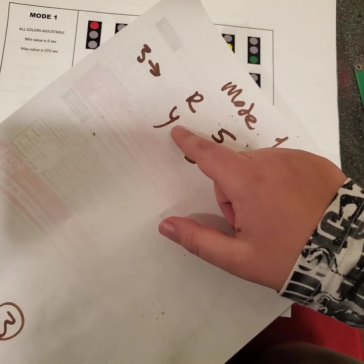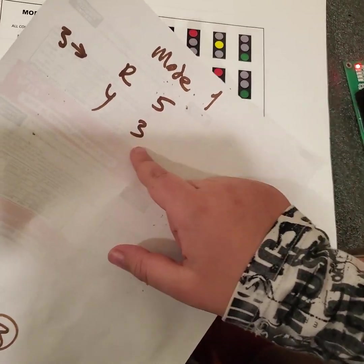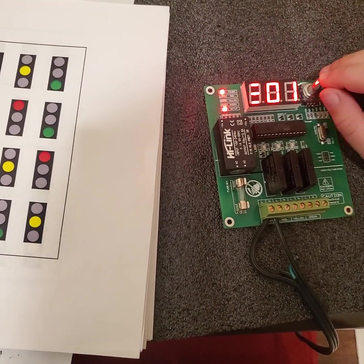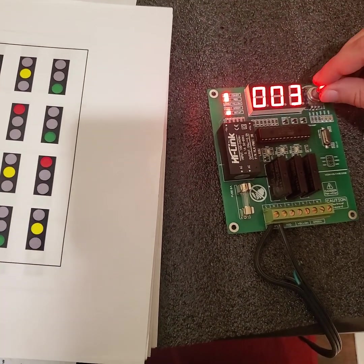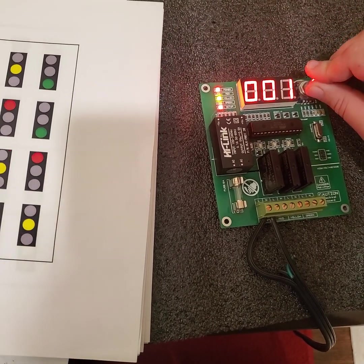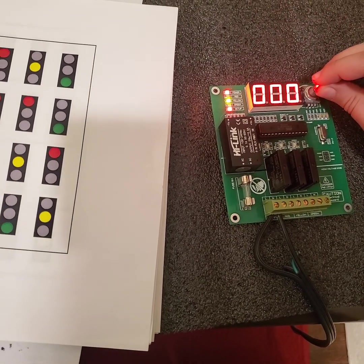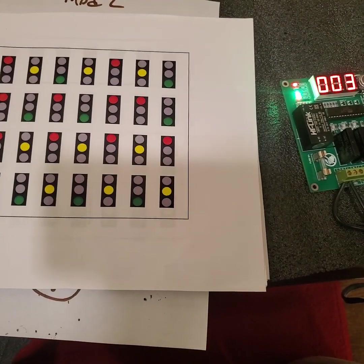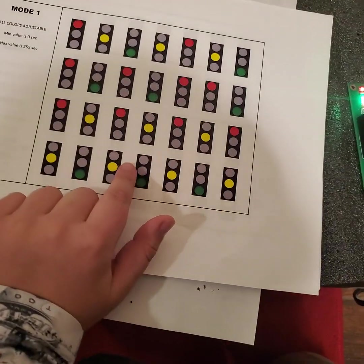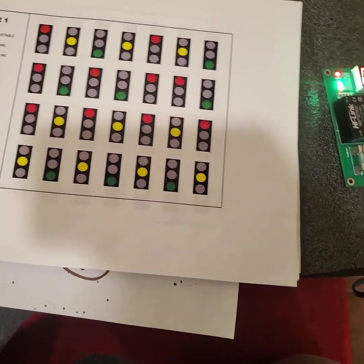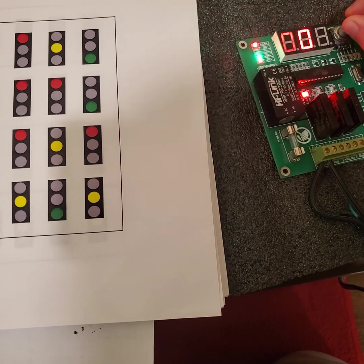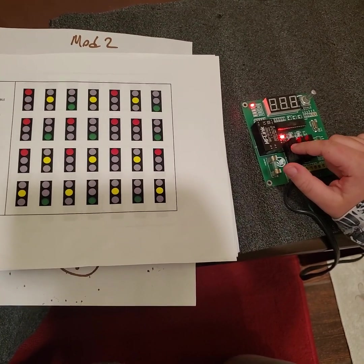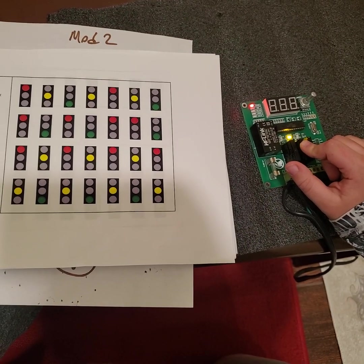First, we're going to do red 5 seconds and yellow 3 seconds. We press this, go to mode 1, set red to 5 seconds and yellow to 3 seconds. Since there's no green here, we're going to move the green to zero. Now the red is working 5 seconds and the yellow is working 3 seconds.